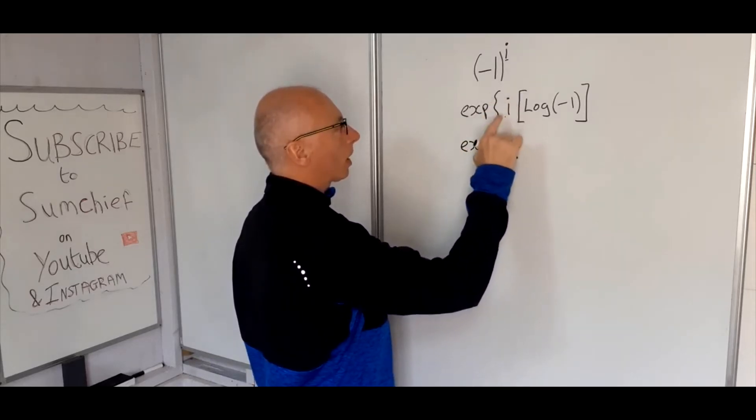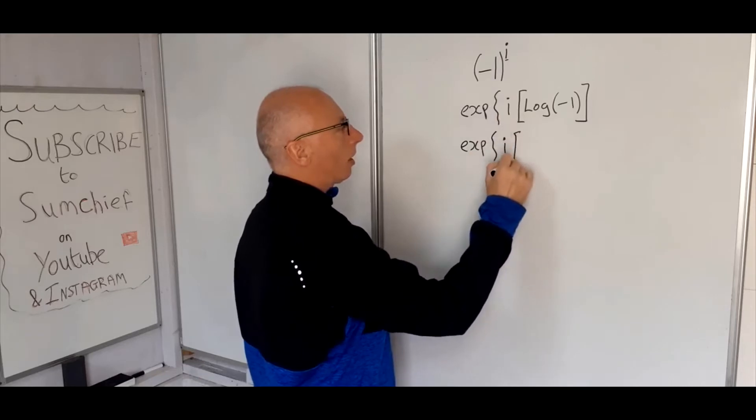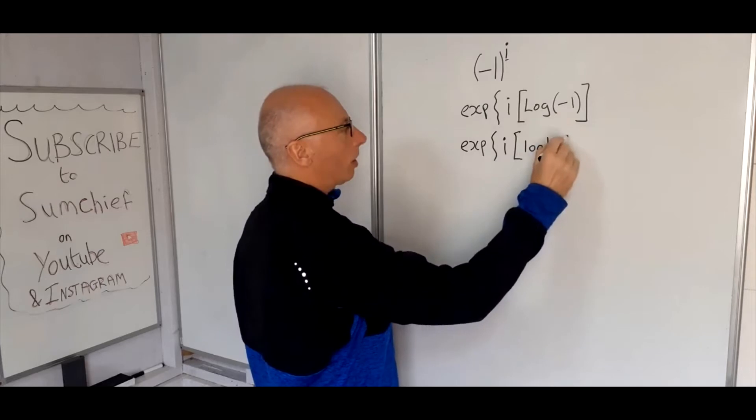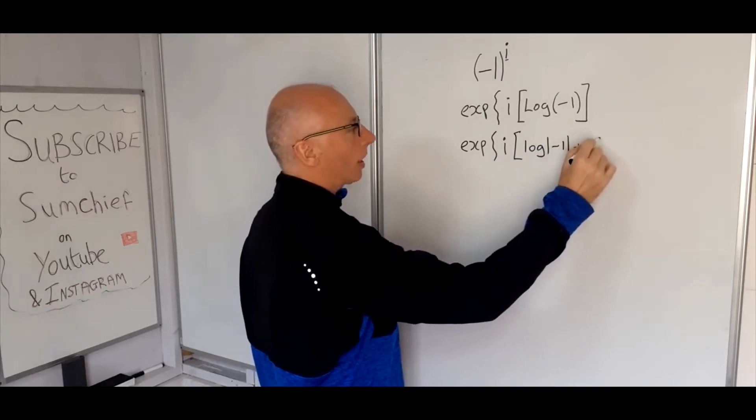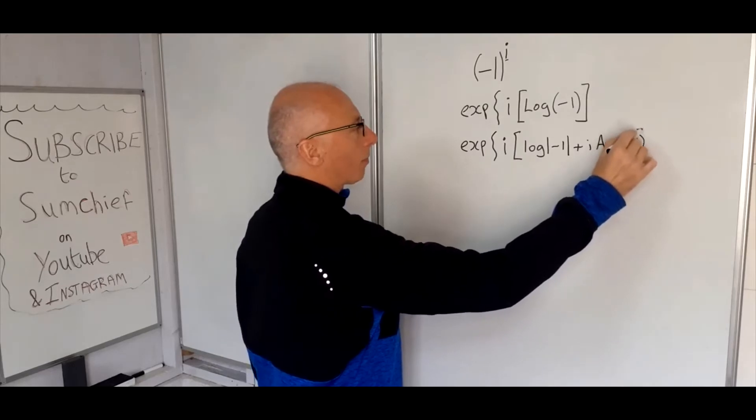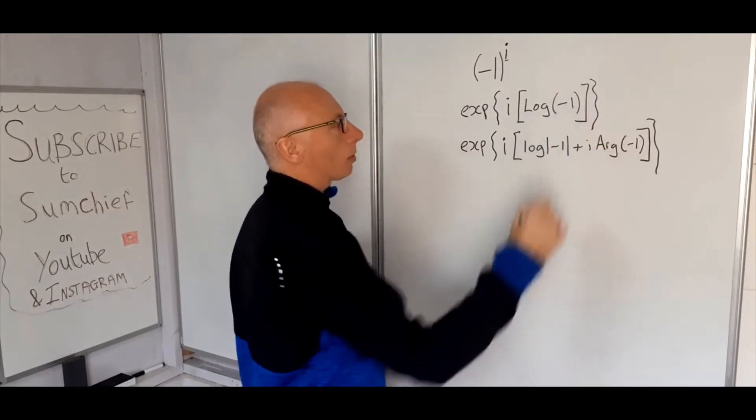So, I'll just make sure these i's are clear, and then log of the modulus of minus one plus i times the principal argument of minus one. I'll put that one in there as well.